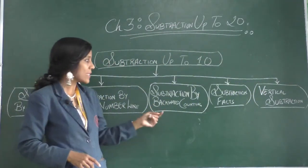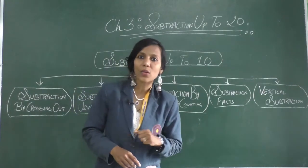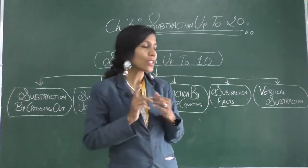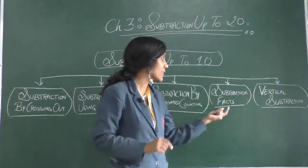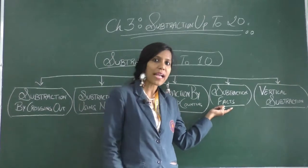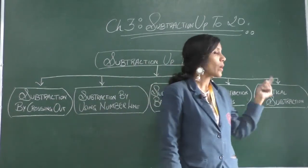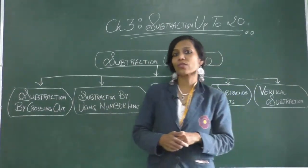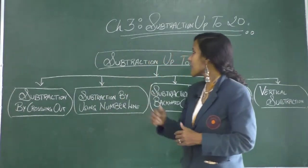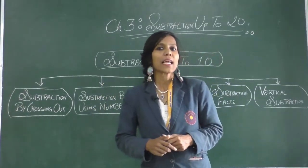After this we had subtraction by backward counting, which we again did on our fingers. Then subtraction facts, and finally vertical subtraction. This is what we covered under subtraction up to 10.